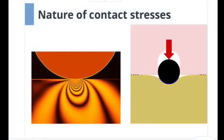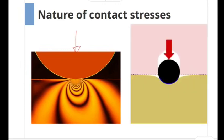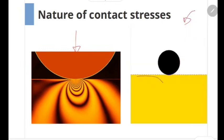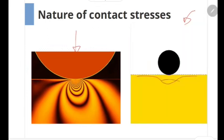Let us have some understanding about the nature of contact stresses. When two bodies touch each other, in the case of two spheres contacting there is a point contact, and in the case of two cylinders contacting there is a line contact. As the load increases, because these two bodies are deformable, the body deforms and takes a shape so as to increase the area of contact. As a result, some finite amount of stress gets developed at this region. The first step in calculating contact stresses is to estimate the size of this region caused by deformation due to the load.